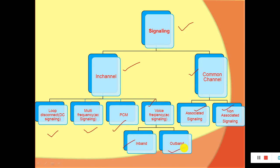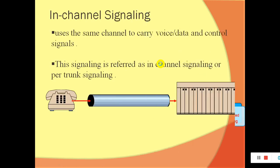As per the syllabus or as per the requirement or frequent use of signal links, we will discuss about these classifications. So first of all, let's discuss about the broad classification of signaling, which is in-channel and common channel signaling. I'm going to explain in-channel signaling first because it is very important to understand.